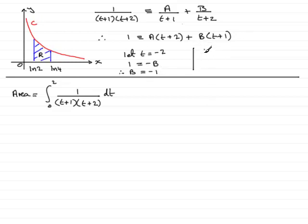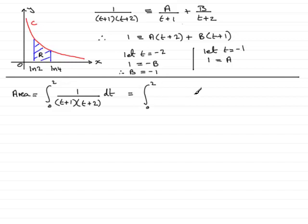Similarly, letting t = -1 eliminates the B term, giving 1 = A(-1+2) = A, so A = 1. We can now write the integral from 0 to 2 of 1 over (t+1)(t+2) dt as the integral from 0 to 2 of [1/(t+1) − 1/(t+2)] dt. Make sure to keep these in brackets, integrated with respect to t.